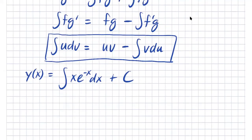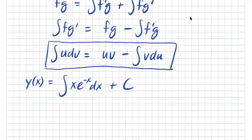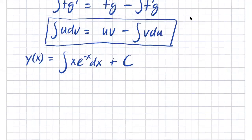Integration by parts allows us to take part of the integrand and differentiate it. The thing bothering us here is that we know how to integrate e to the negative x easily, but there's this times x as well. Let's use integration by parts to take the derivative of that x so it will just go away.